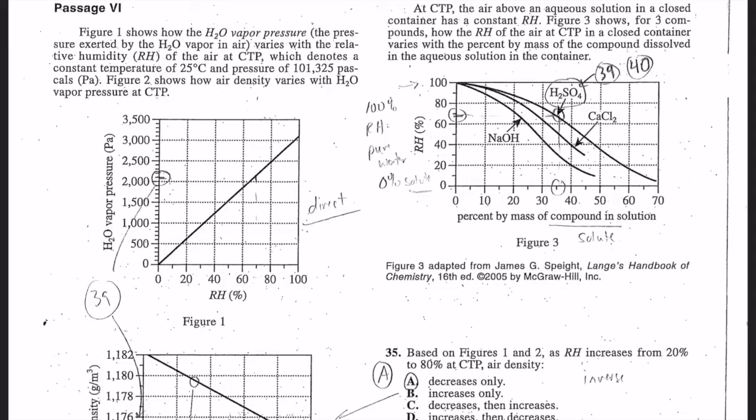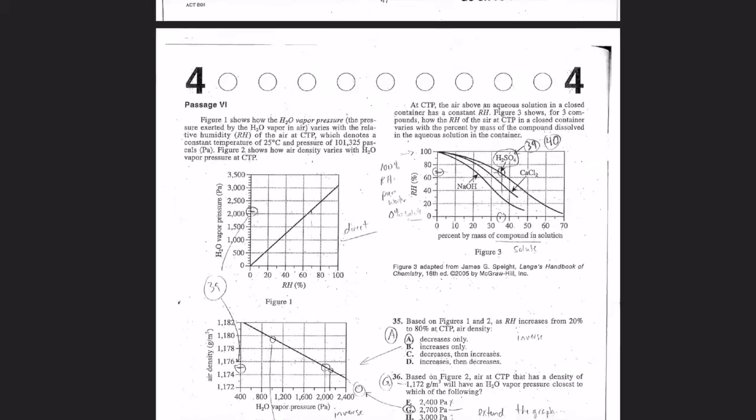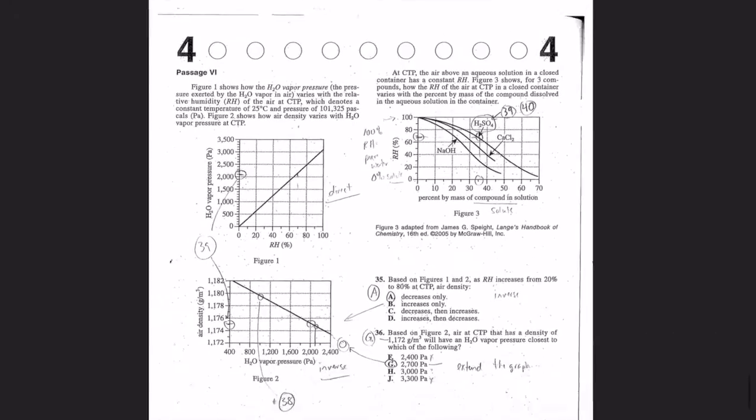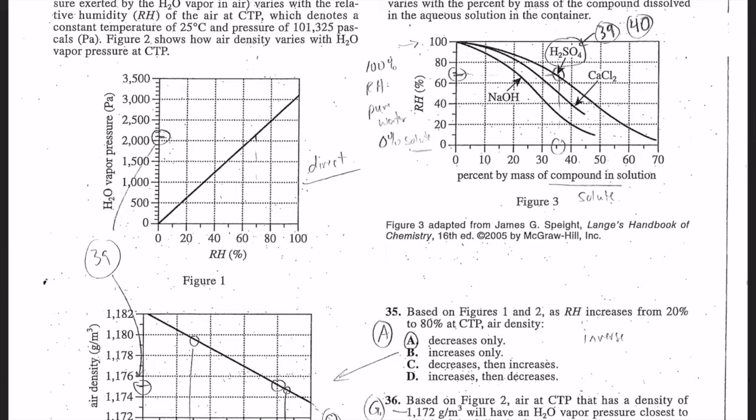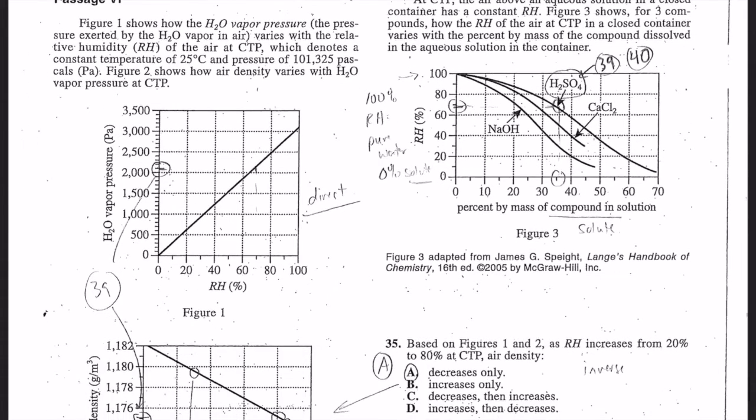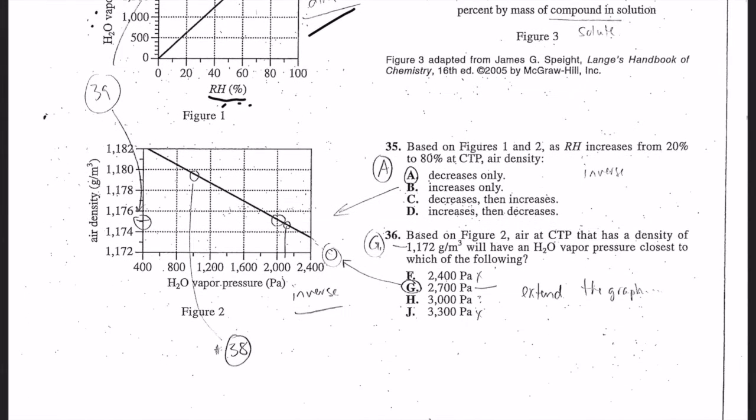Here's passage number six - this is the last one. I'm going to pause this one so you can see it all. This is the last passage and I thought, wow, this is so simple. And it really is simple. This is a direct relationship. In figure one, the relative humidity has higher, more water vapor pressure. If you have more water, you have more humidity - it's a direct relationship. That's so simple. Number two: when you have higher water vapor pressure, it's an inverse relationship of air density. And then figure three is a more complicated graph, but do you see there's three chemicals on here, and it's relative humidity, which relates to this graph over here.